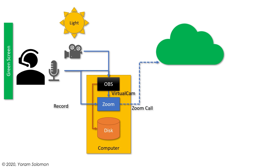Now let me show you where OBS fits in the overall scheme. If this is your computer, you'll have a camera, a microphone, and lights. OBS fits in between the camera and Zoom. It can also fit between the microphone and Zoom, but you'd need to install one more thing and I don't see the value. Typically, the microphone goes directly to Zoom, while the camera goes through OBS instead of going directly into Zoom.